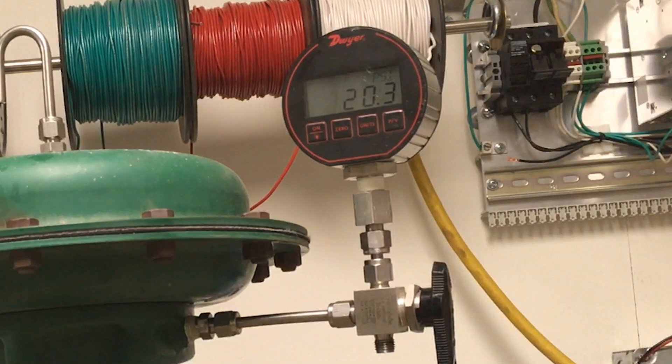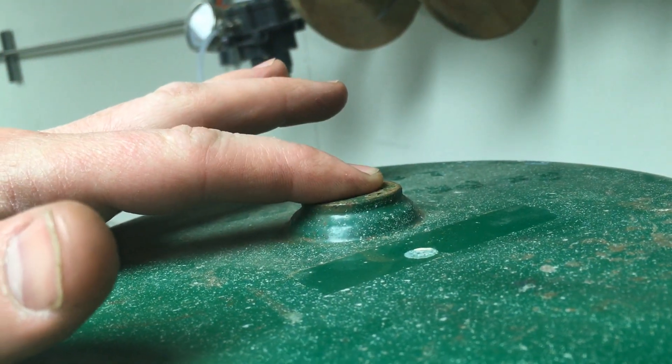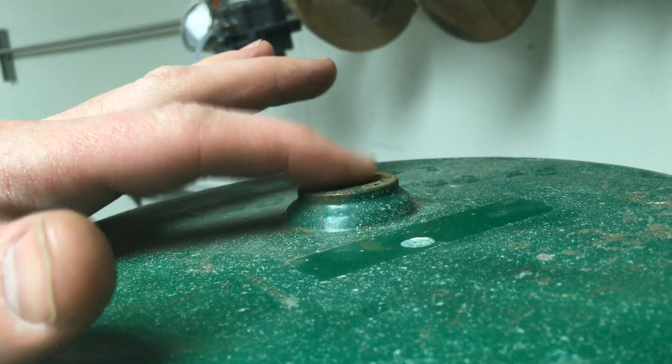If you notice the pressure gauge dropping during the pressure test, you can remove the vent from the top and place your finger over the hole to determine if air is passing through the diaphragm.